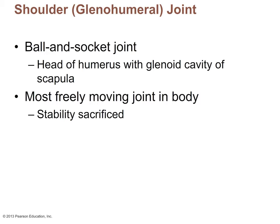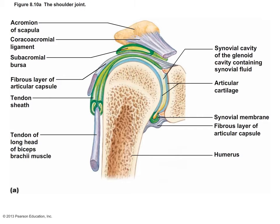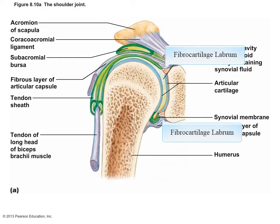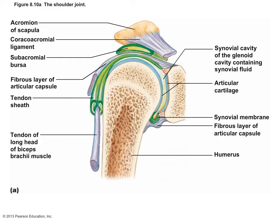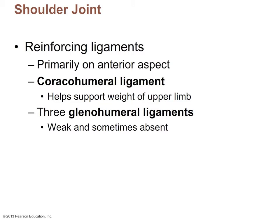Here we see a frontal section through the shoulder joint. The convex head of the humerus fits into the very shallow glenoid cavity of the scapula. The glenoid cavity is somewhat deepened by a fibrocartilage labrum at its periphery. Just like in other synovial joints, both articulating surfaces are covered with hyaline cartilage and surrounded by an articular capsule containing synovial fluid, both of which reduce friction. In comparison to the knee or hip, there are very few reinforcing ligaments in the shoulder, which contributes to its large range of motion but also makes it more prone to injury and luxation.